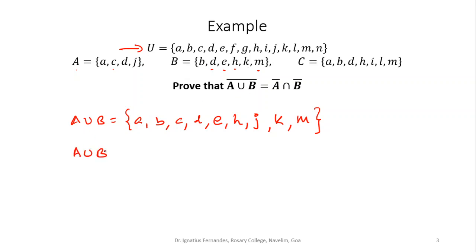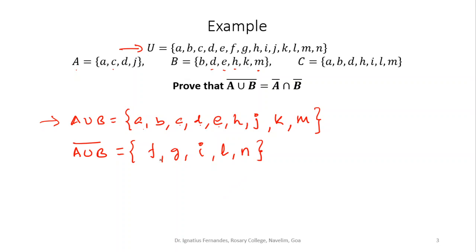Now I want (A union B) complement — the elements not in A union B compared to the universal set. Going through U: F is not here, G is not here, I is not here, L is not here, N is not here. So (A union B) complement = {F, G, I, L, N}. This is our left hand side.